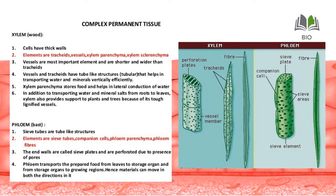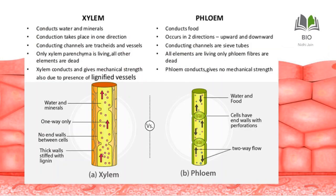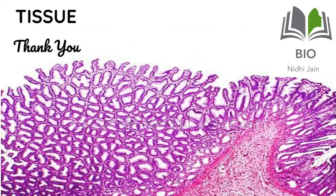To summarize: the function of xylem is transportation of water and mineral salts from root to leaves; the function of phloem is transportation of food. The difference between xylem and phloem lies in their cell types, main functions, and structure. We know their cells, their main functions, and have a basic understanding of their structure. This covers the topics for this part of the chapter.